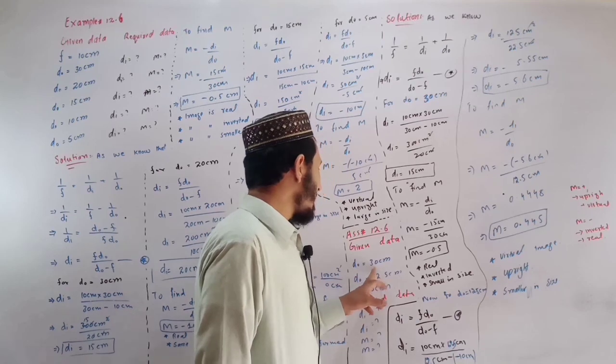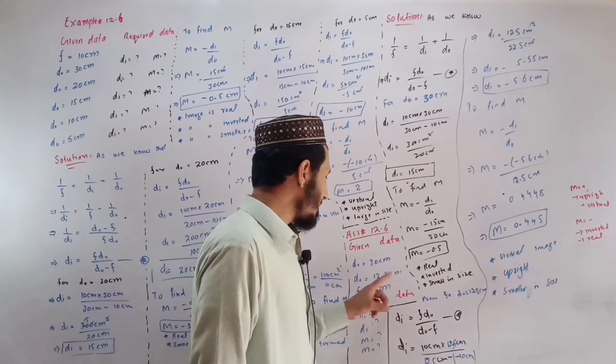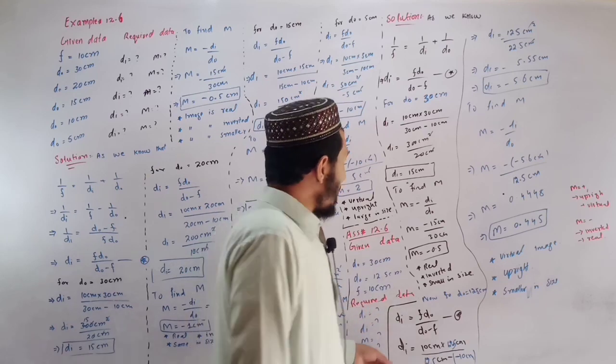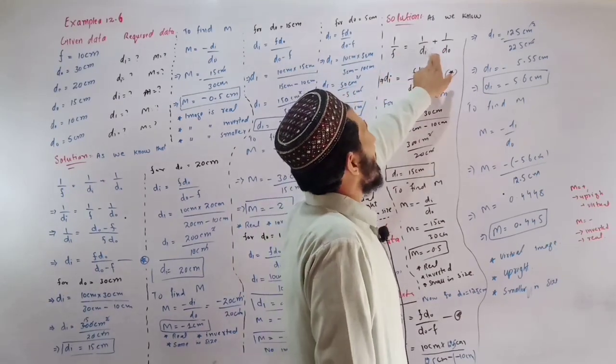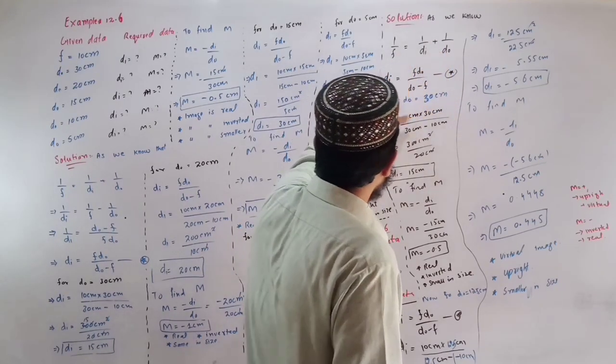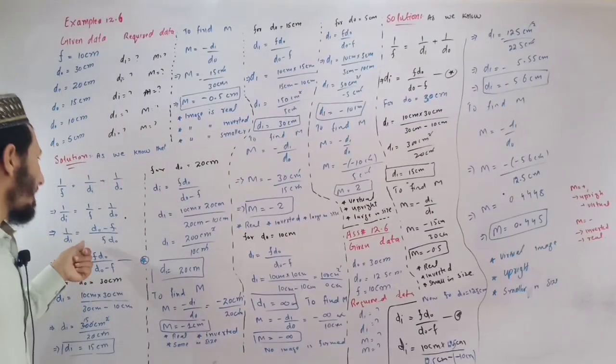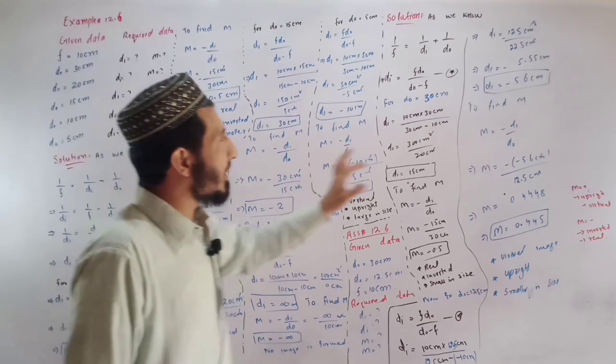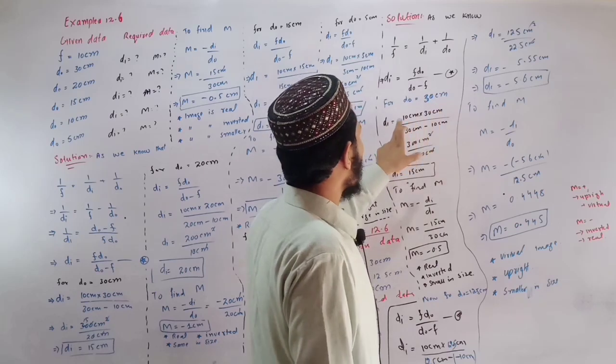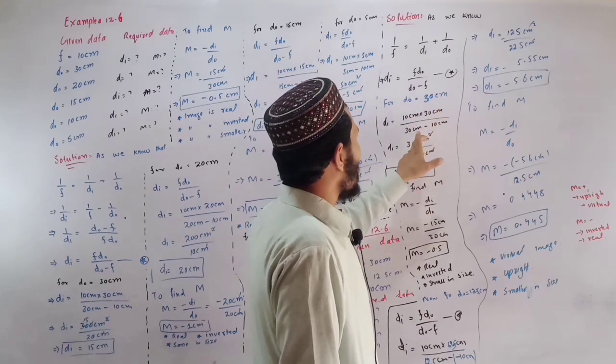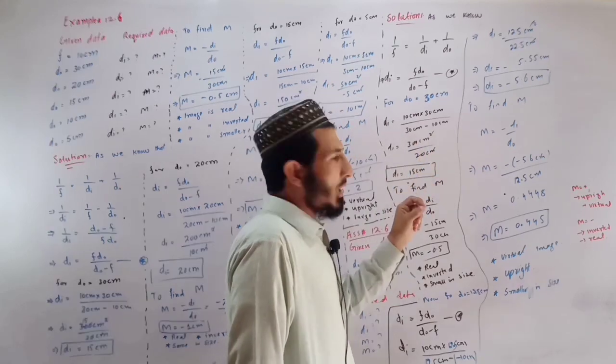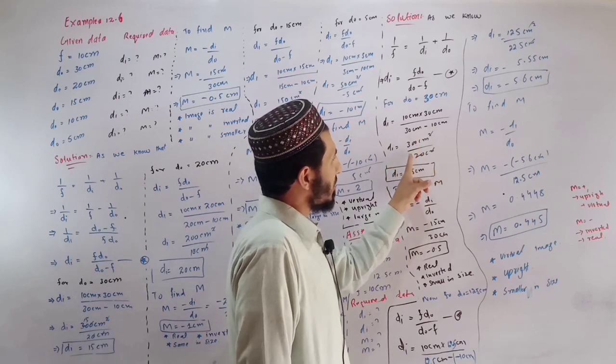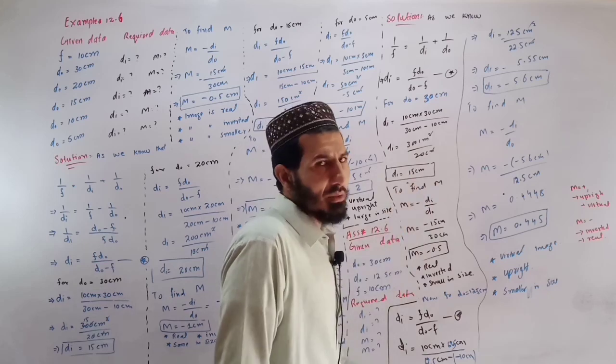Given data: d0 is 30 cm, d0 is 12.5 cm, f is 10 cm. Find di and m. The solution: 1 over f equals 1 over di plus 1 over d0. 1 over di equals 1 over f minus 1 over d0. Di equals 30 divided by 2, so di is 15 cm.